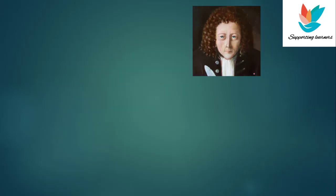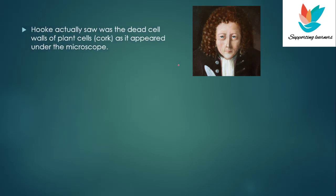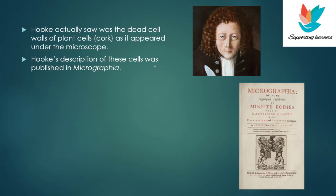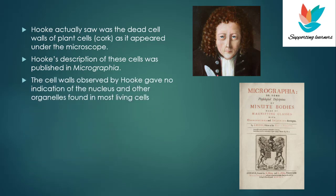This is a picture of Robert Hooke. Now what Robert Hooke observed was actually the dead cells — dead plant cells. Cork is actually the dead part of the plant, and he observed dead cells under the microscope. Hooke's description of these cells was published in Micrographia, a very famous scientific book which gives the description of all that Robert Hooke observed under the microscope.